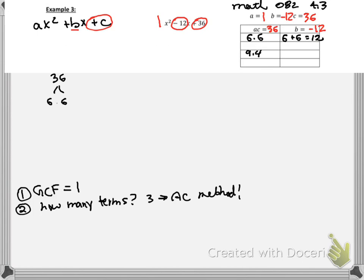And we want a negative 12. Well, that's actually pretty easy to fix here, because negative 6 times negative 6 is also equal to positive 12. And negative 6 plus negative 6 is equal to negative 12. So that's my solution.